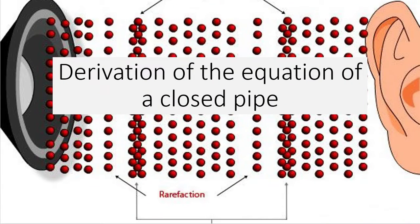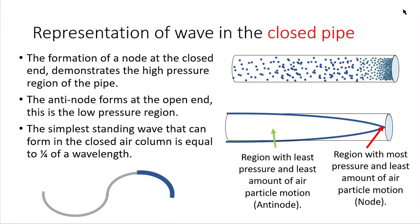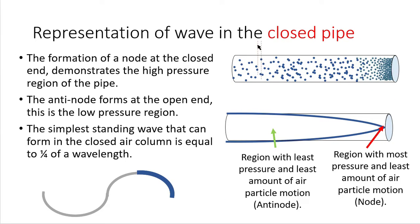We're going to derive the equation for a closed pipe in this video. With the formation of a standing wave in a closed pipe, we can see a high pressure region forming inside the pipe towards the closed end, and towards the open end we tend to have a low pressure region. This can be represented as a transverse wave to illustrate the concept more clearly. We can see there's a node formed at the closed end and an antinode at the open end.